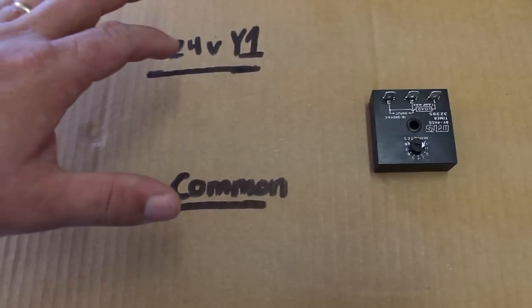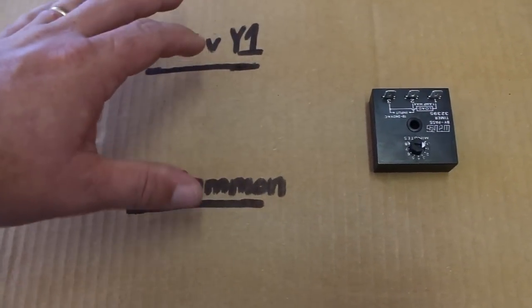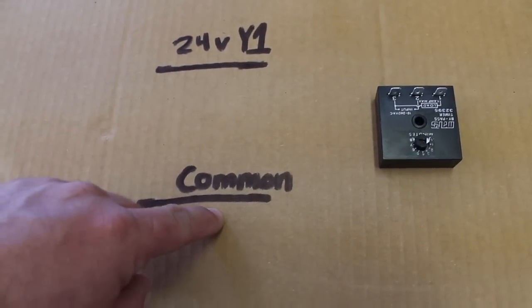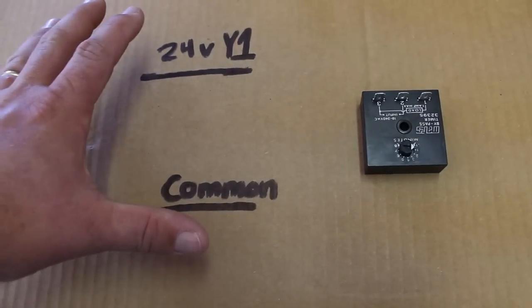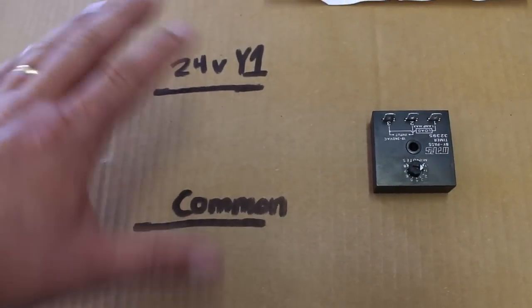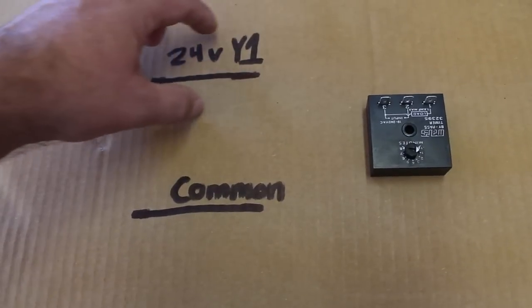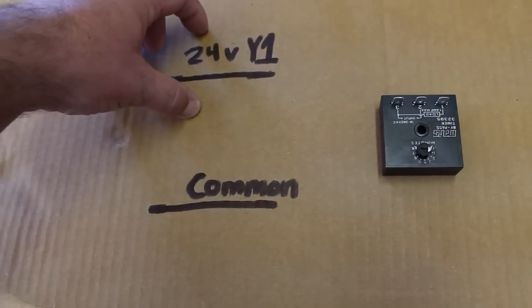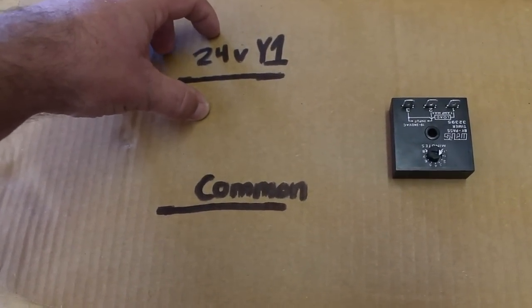The wires coming in will be 24 volts Y1 and 24 volt common. These have many colors in different units. Y1 is often yellow but I've seen it as blue, black, and all sorts of different colors.